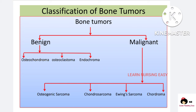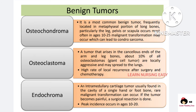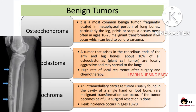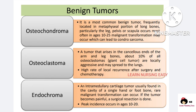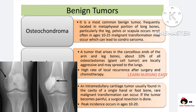The classification of tumors: benign includes osteochondroma, osteoclastoma, and enchondroma; malignant includes osteogenic sarcoma, chondrosarcoma, Ewing's sarcoma, and chordoma. In benign tumors, osteochondroma most commonly occurs in the metaphyseal portion of the long bones, commonly found in the leg, pelvis, and scapula. It is common in ages 10 to 25, and if malignant transformation occurs it can lead to chondrosarcoma. Osteoclastoma arises in the cancellous ends of the bones in the arms and the legs.